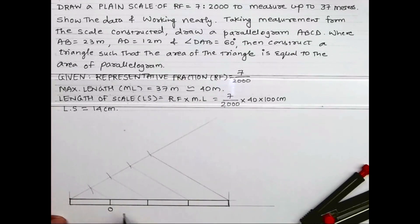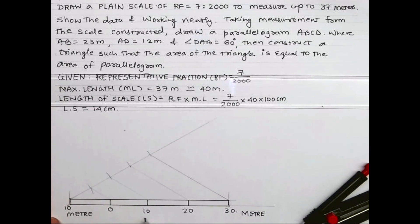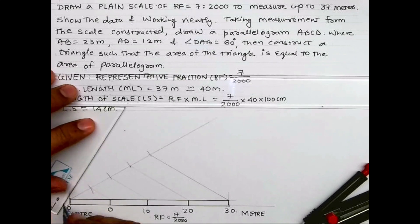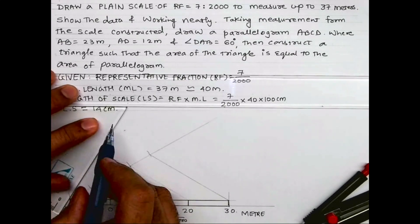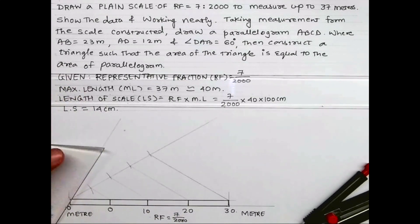This is 40 so we will write 0, 10, 20, 30. This is meter, and here also we will have meter. RF is 7 upon 2000. This is the layout. Meter on both the sides and RF. Now we will divide the first block into 10 parts.